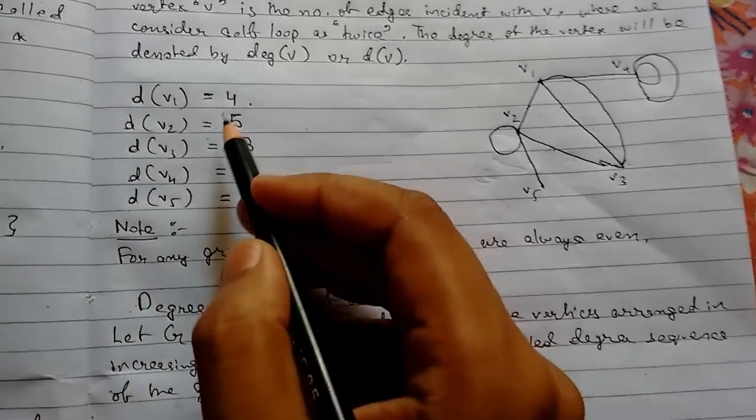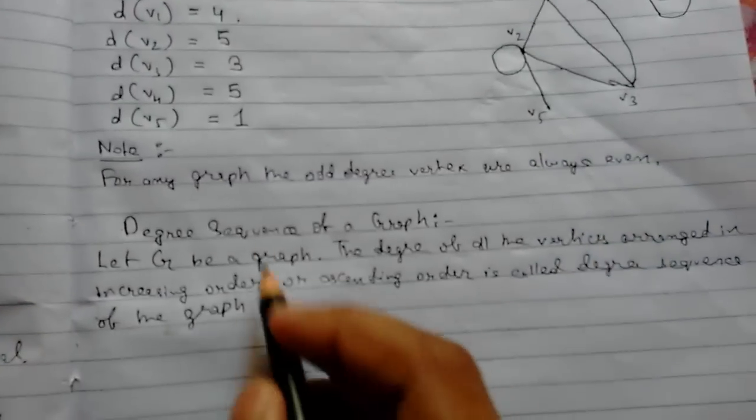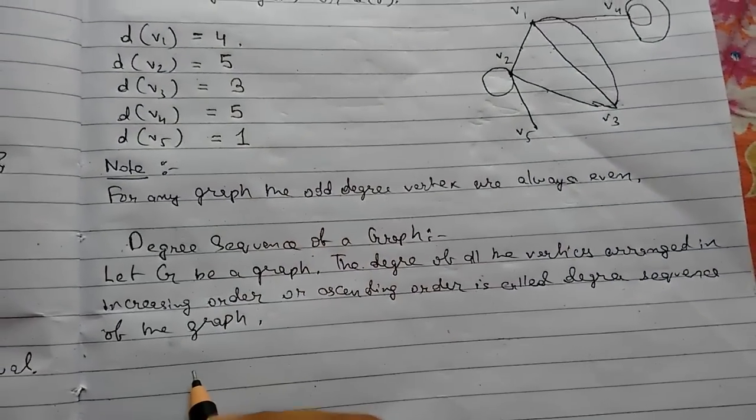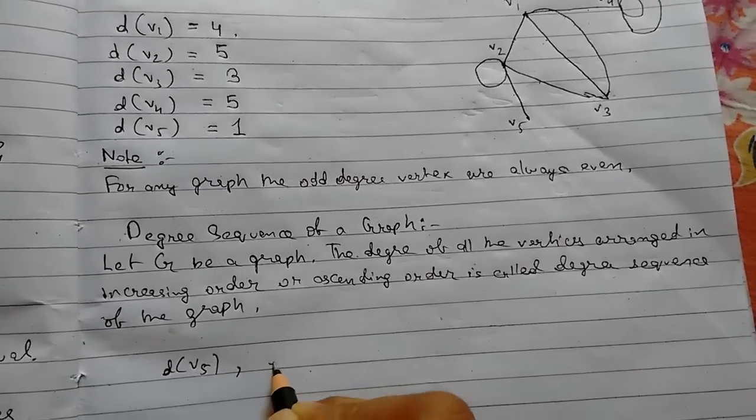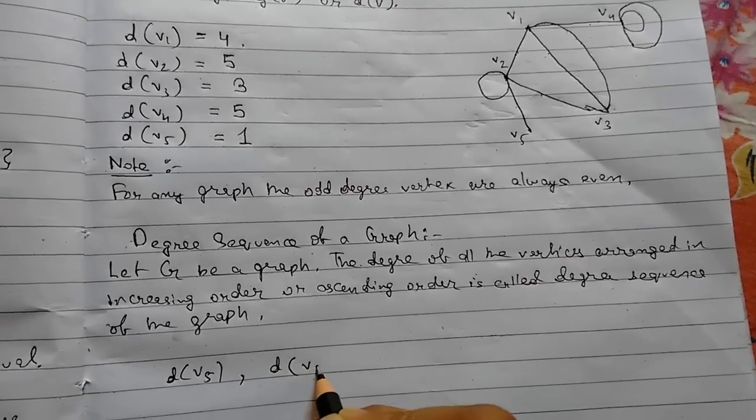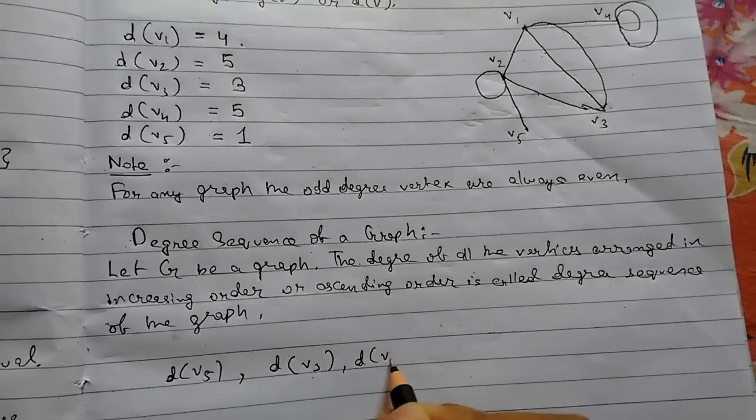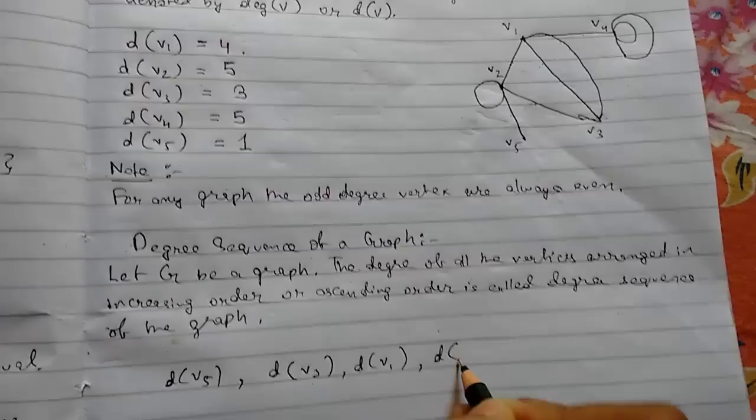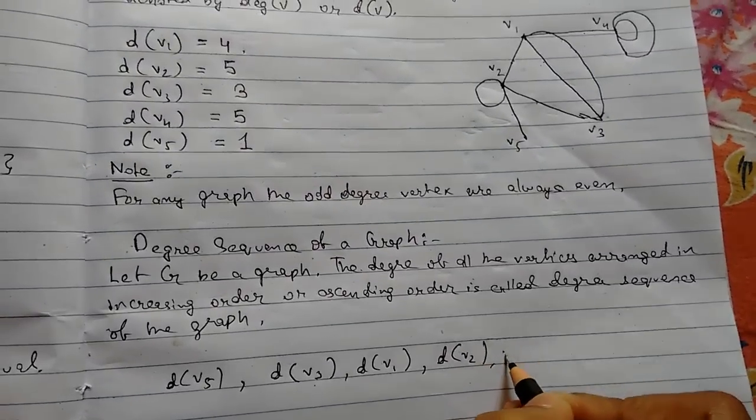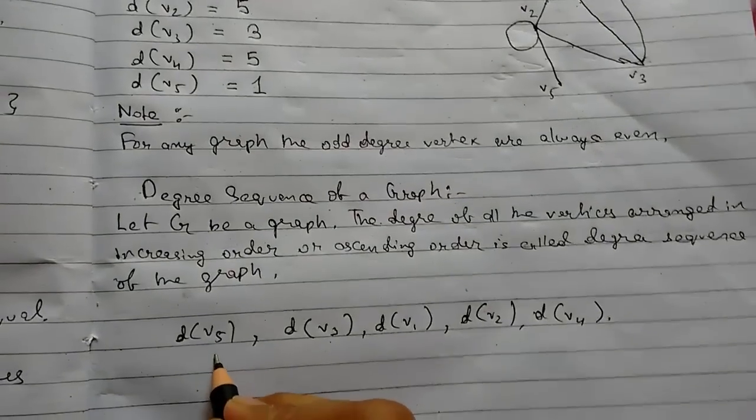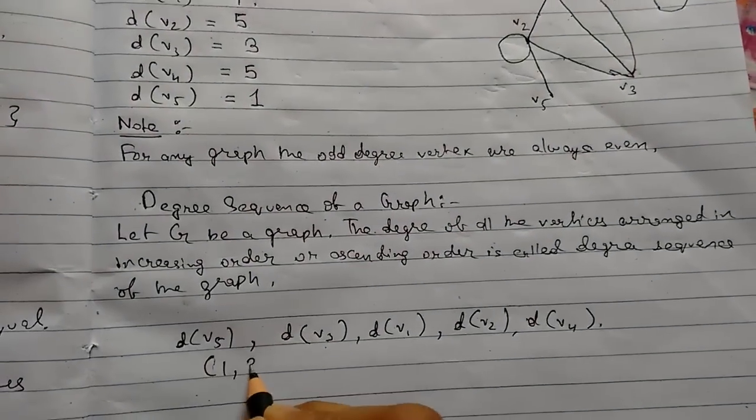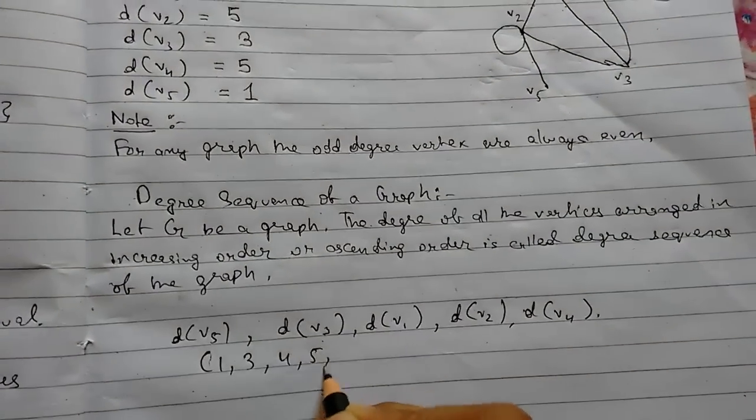So let us take this graph. So now we will add a degree sequence of it. So increasing order: d(V5), d(V3), d(V1), d(V2) or d(V4). Now we can write it like this also. This will be 1, 3, 4, 5, 5.